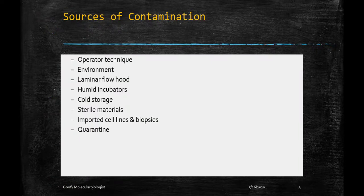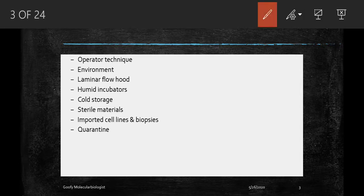The first source of contamination is the operator's technique. If all the reagents are sterile and equipment is proper, then contamination depends on the interaction of the operator's technique with environmental conditions — how you handle the equipment. The second source is the environment: you need a clear, traffic-free area in an isolated room. Equipment brought into the sterile area from storage can also increase the risk of contamination, so you have to maintain a very strict cleaning program and wipe down anything that is brought in.